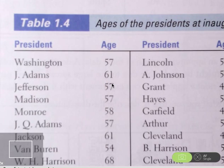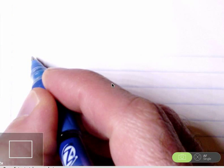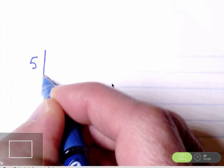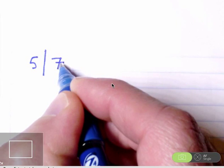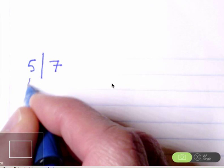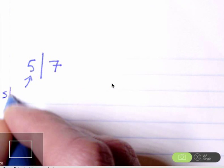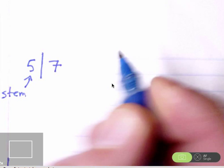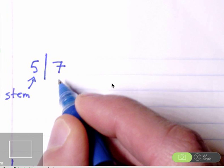So we're going to convert George Washington's age into the following. We're going to think of the five separately from the seven and separate them with a bar. So this five here is called the stem. Here, this seven is called the leaf.